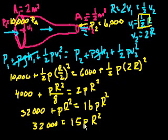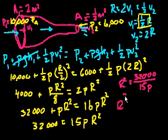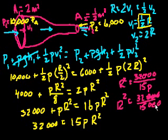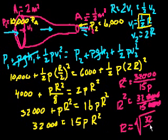And then what's rho? What's the density of water? Well, the density of water is 1,000 kilograms per meter cubed, so this is 1,000. So let's divide both sides by 15 times rho. So let me draw, let me switch colors. So we get r squared is equal to 32,000 divided by 15 rho. Rho is 1,000, so r squared is equal to 32,000 over 15,000, which is the same thing as 32 over 15. So r is equal to the square root of 32 over 15.